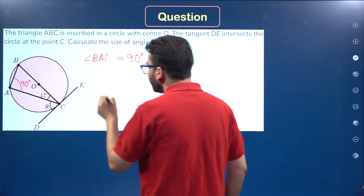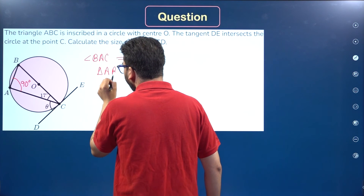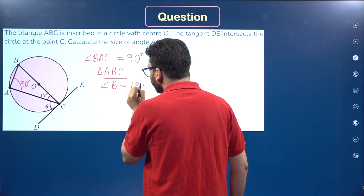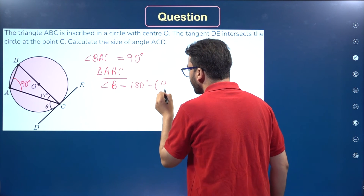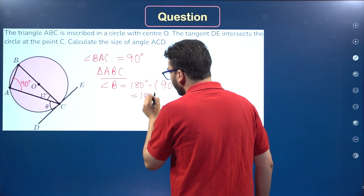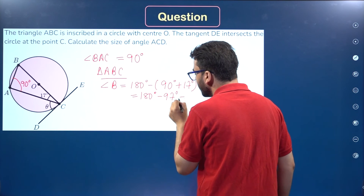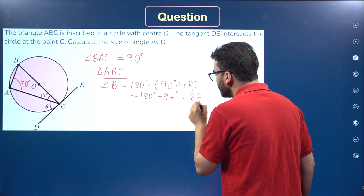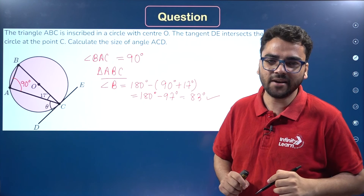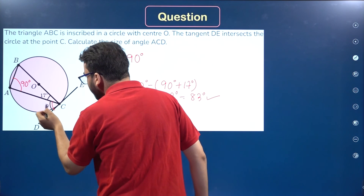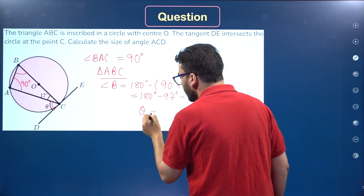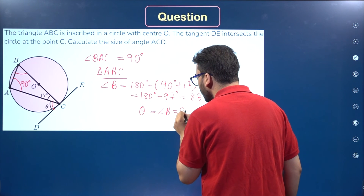Now, in triangle ABC, using the angle sum property, angle B equals 180 minus (90 plus 17), which is 180 minus 97, which equals 83 degrees. Using the alternate segment theorem, theta is equal to angle B, so theta equals 83 degrees.